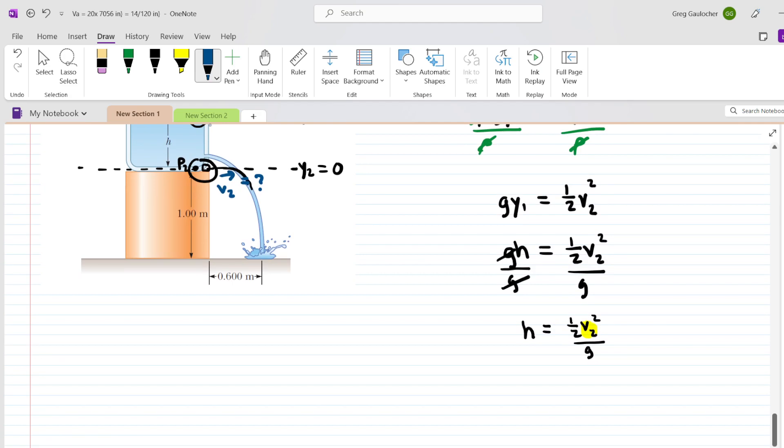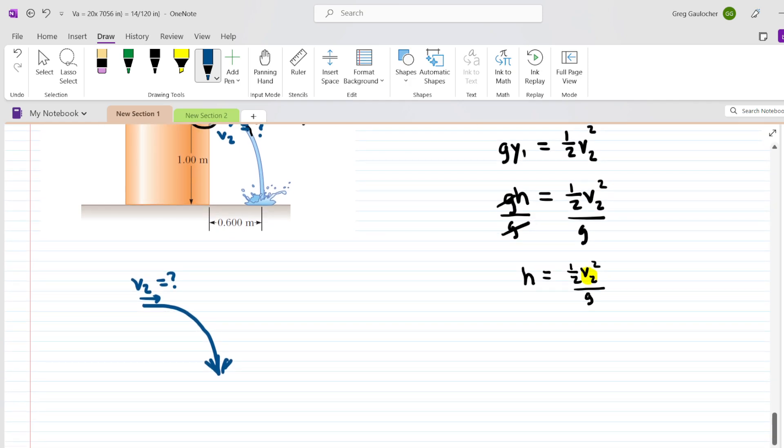So this actually turns into a projectile motion question, which you studied several chapters earlier. So let's just understand the scenario a little bit further. We have the water jetting out at this point, V2, and we need to figure out that value. And so it's a projectile motion question. We can start labeling some of the other dimensions here. We know that this height is 1 meter, and then we know that this horizontal distance is 0.6 meters. And you might remember when you solved projectile motion questions that a useful way of calculating quantities was to create a table of sorts. So let's go ahead and set up a table.